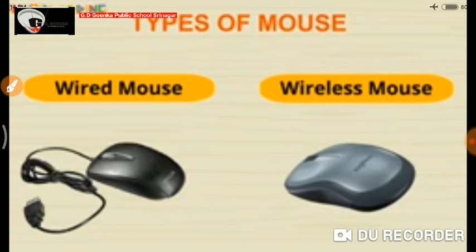So how many types of mouse do we have? We have two types of mouse — Wired Mouse and Wireless Mouse.